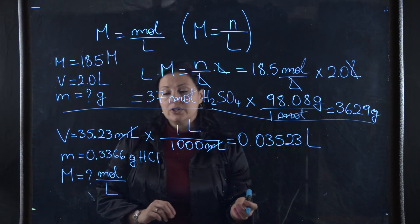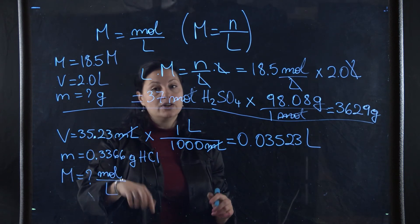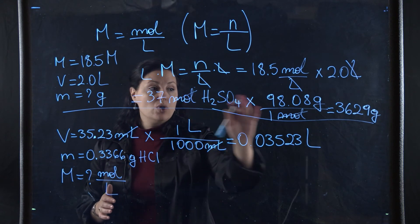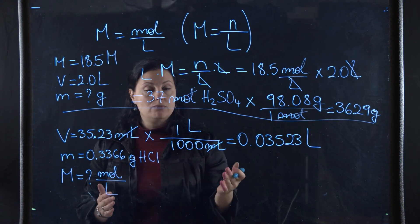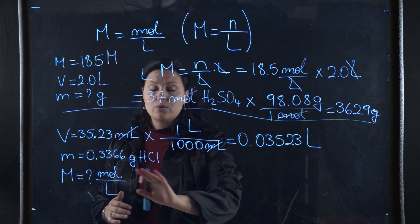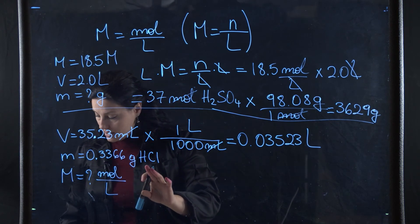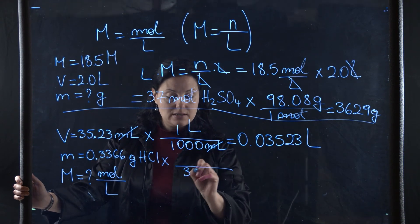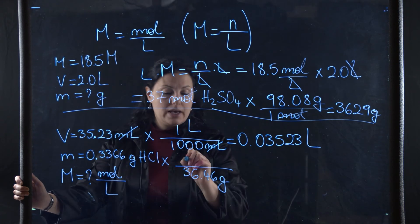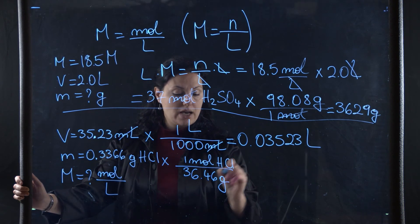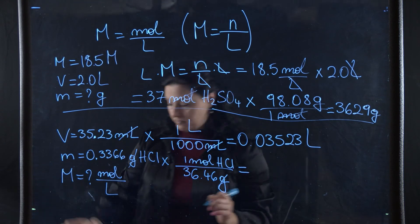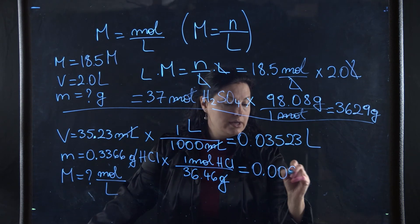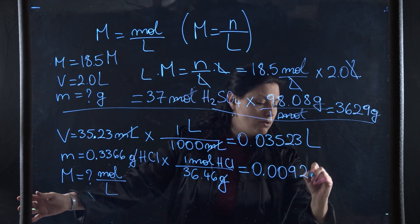Now I have a volume in the correct unit, but I don't have moles. I have a mass in grams. I need to convert that to moles using the molar mass. Here we had moles and converted to grams. Here we have grams and have to convert to moles, so we'll do the opposite. The molar mass of HCl is 36.46, so we flip: 36.46 grams at the bottom and one mole of HCl at the top. My grams will cancel, leaving me with 0.0092 moles of HCl.